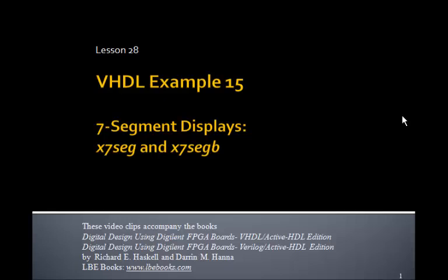This is Lesson 28, VHDL Example 15. In this example, our goal is to write a single VHDL program called x7seg, which will be a component that we can use to display a 4-digit hex number stored in x15 down to 0 on the 7-segment displays. We'll also make another version called x7segb, which will display the 4-digit hex number with leading blanks.